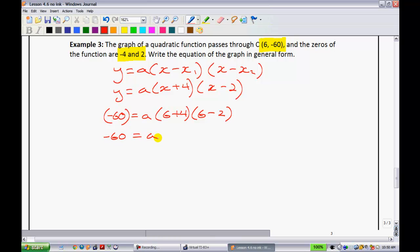I have -60, a, and then we can simplify here. 6 plus 4 is 10, 6 minus 2 is 4. That's going to give me -60 is equal to 40a. I normally just put the a behind the coefficient.